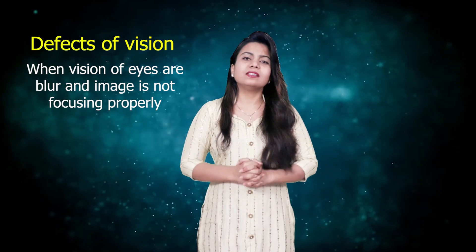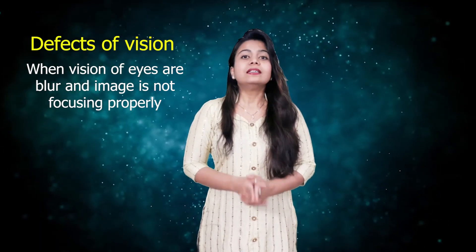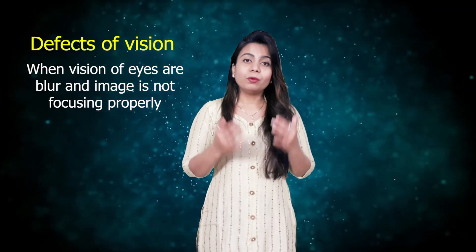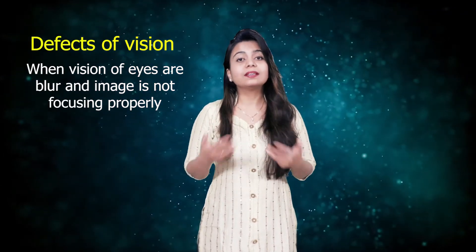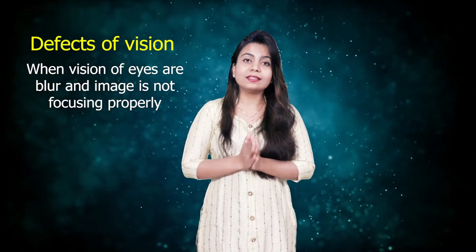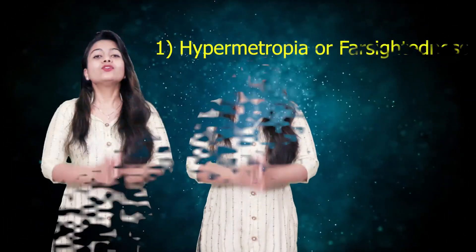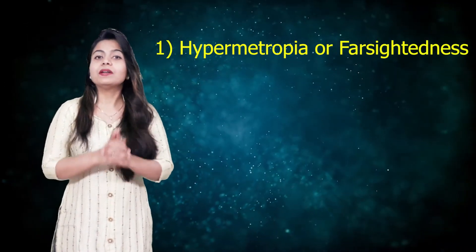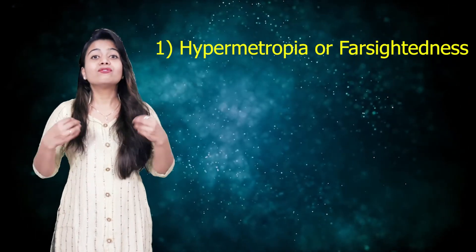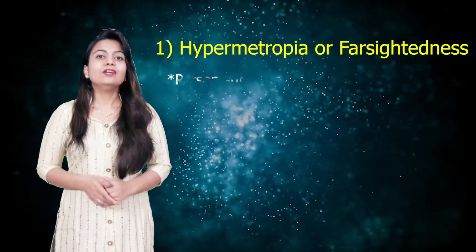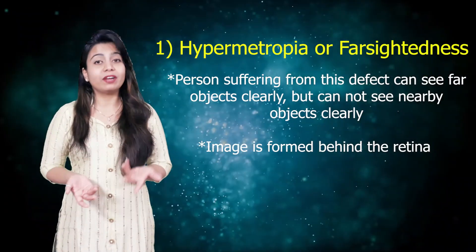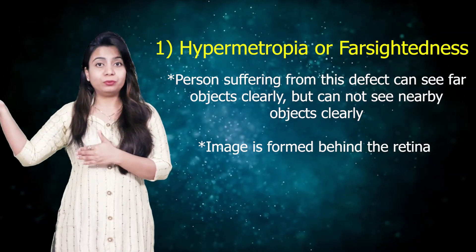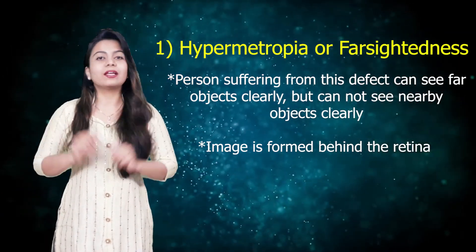So, what are the defects of eyes? Defects of vision means a person suffering from defects cannot see the images clearly, or we can say the image is not focused properly. So basically, there are three defects of vision. The first one is hypermetropia, or we can say farsightedness. From the name itself, you can identify what kind of defect this is.